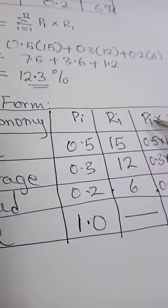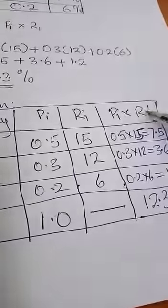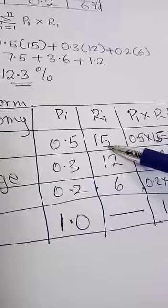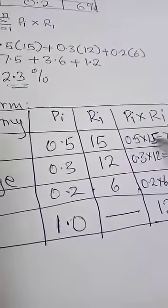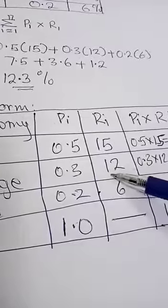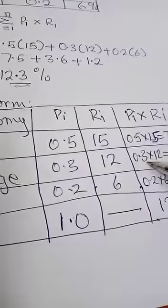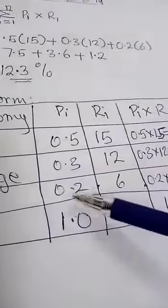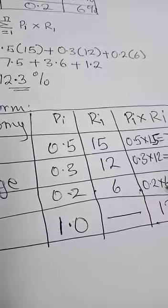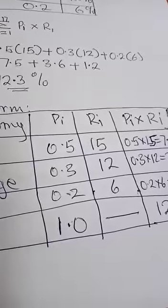This is the probability multiplied by the return. Therefore, 0.5 times 15, which you have here, is 7.5. 0.3 times 12 is 3.6. And 0.2 times 6 is 1.2.